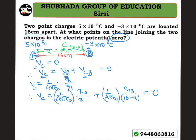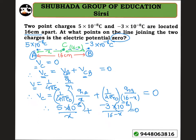Taking 1 over 4 pi epsilon naught as common, and substituting qa equal to 5 into 10 to the power of minus 8 coulomb divided by x, plus qb equal to minus 3 into 10 to the power of minus 8 divided by 16 minus x, equal to zero. Cancelling 10 to the power of minus 8, we get 5 divided by x equals 3 divided by 16 minus x.